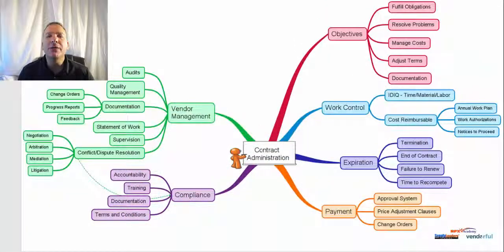What we want to talk about specifically today are the six things you need to understand to do appropriate contract management. Those are: the objectives of the contract — in other words, what are you trying to buy and get delivered from your vendors?